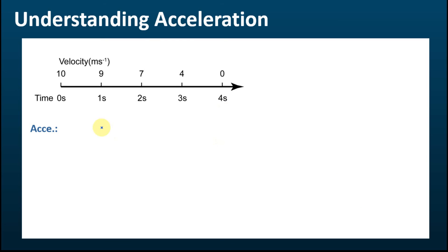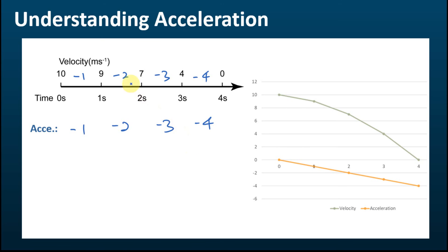In the next case, the velocity decreases from 10 to zero, decreasing by 1 in the first second, then by 2, 3, and 4. So the acceleration is negative 1, negative 2, negative 3, and negative 4. It may look like the velocity and acceleration both decrease, but we must remember that acceleration is a vector quantity and the negative sign only indicates direction. The magnitude of acceleration actually increases from 1 to 4, so this is the case where velocity decreases but acceleration increases.